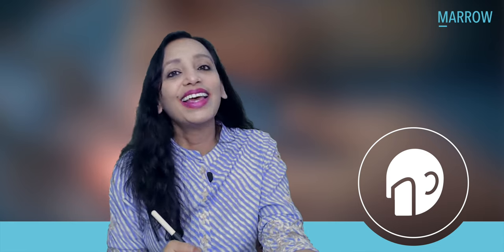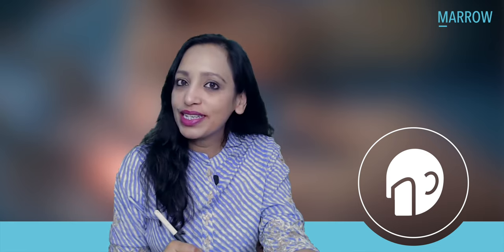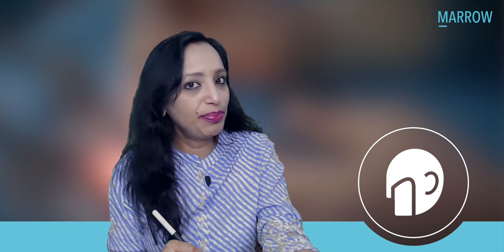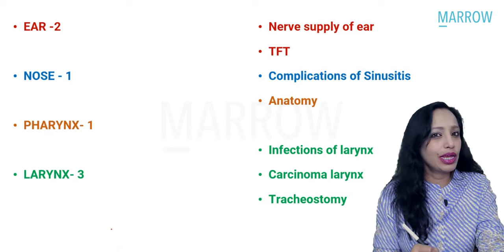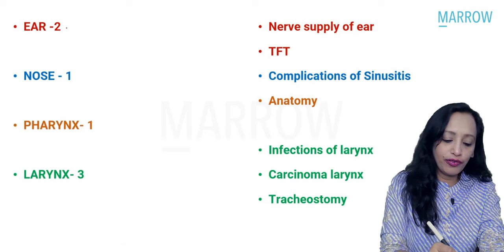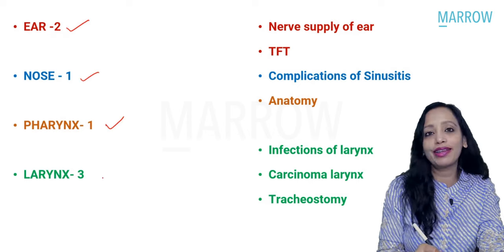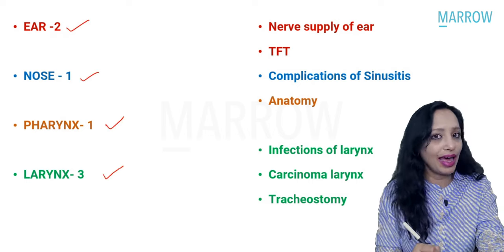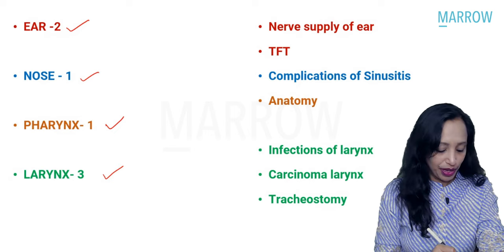Hello students. Let us see what the ENT questions in the NEAT 2023 paper were. We could recall a total of around seven questions from ENT, out of which two were from ear, one from nose, one from pharynx, and three from larynx. Let us quickly see what these questions were.